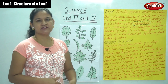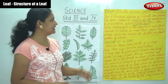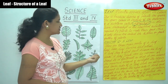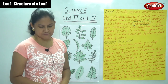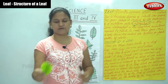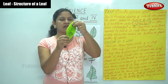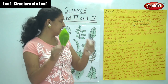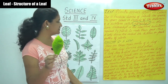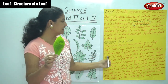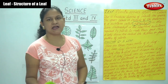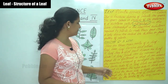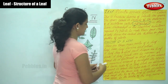Next we are going to see the structure of a leaf. There are three main parts of a leaf. I have a leaf in front of me and we are going to see its structure. The three main parts are: leaf base, lamina, and petiole.